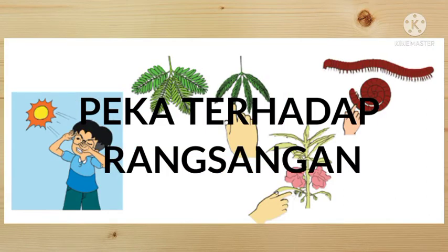Manusia dan hewan menggunakan indera untuk mengenali adanya rangsangan yang datang. Contohnya mata yang peka terhadap rangsangan cahaya, dan telinga yang peka terhadap getaran suara. Ketika ada suara yang bising, telinga kita langsung peka terhadap gangguan suara keras yang bisa mengganggu pendengaran. Bagaimana dengan tumbuhan?